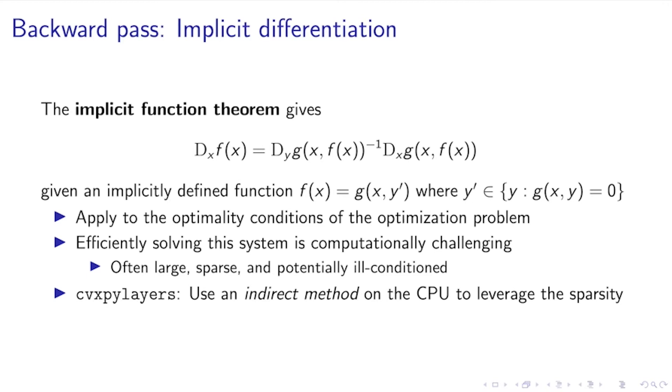The way that we use this in the differentiable optimization setting is that we apply this to the optimality conditions of our optimization problem. So this is either the KKT system or some kind of more general set of optimality conditions, where finding the zero points corresponds to finding the minimum of the optimization problems. Once we have this, we apply the implicit function theorem and get the derivatives that we need for backpropagation.